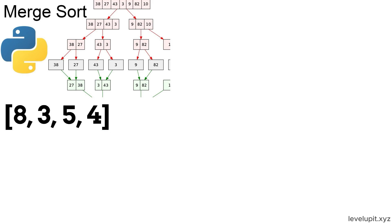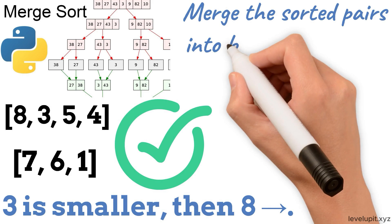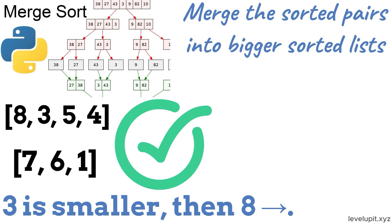Split into 8, 3 and 5, 4. Split again until single elements. Now merge 3, 8 and 4, 5 by comparing fronts. 3 is smaller, then 8, and so on. Do this for all pairs. Then merge the sorted pairs into bigger sorted lists until the whole list is sorted.